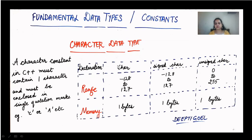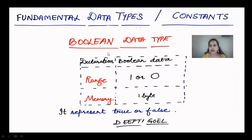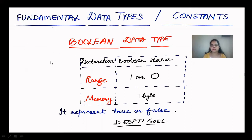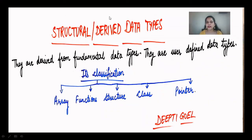The boolean data type — as you know from binary operations and logic gates like AND, OR, NOR — the output is always zero or one, representing on or off position. The range of the boolean data type is always two values: 1 or 0. The memory location is 1 byte. It represents an on/off condition or a true/false condition.